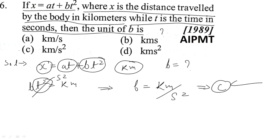So, option c is correct: kilometers per second squared. Thank you.